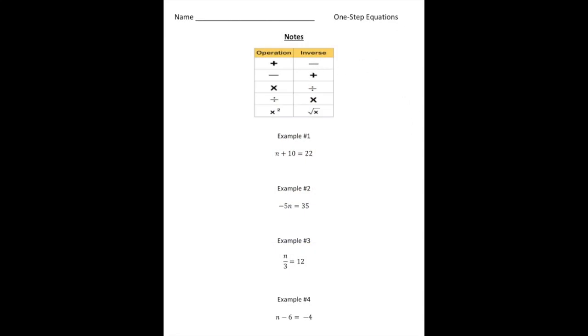The first thing I want you to pay attention to is this little table here. Notice it says operation, so we have plus sign, minus sign, multiplication sign, division sign, and then squared. And then inverse, and notice this is the opposite of this. So the opposite of addition is subtraction, or you could say the inverse of addition is subtraction. So the inverse of subtraction is addition, and so forth. So what you've got to remember is to do the inverse operation to solve these.